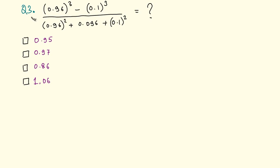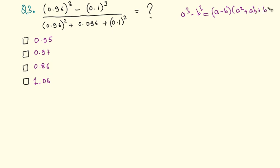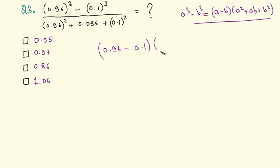Let's solve the third question. We have 0.96 cubed minus 0.1 cubed. We use the formula a cubed minus b cubed equals a minus b multiplied by a squared plus ab plus b squared. So 0.96 cubed minus 0.1 cubed can be written as 0.96 minus 0.1 into a squared plus ab plus b squared.